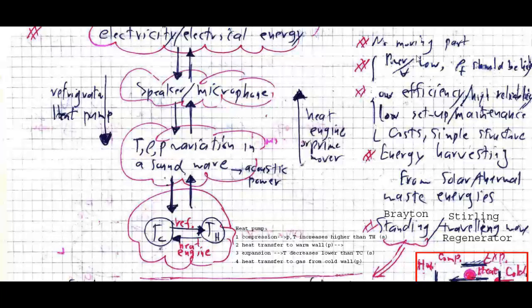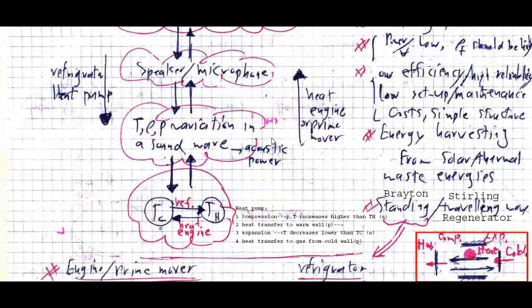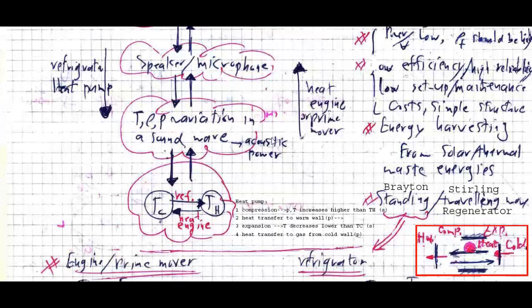Such systems have no moving parts — this is a general characteristic of any direct energy conversion method. However, the ratio of output power to volume is low. DEC devices generally have low efficiencies but higher reliabilities, low setup costs, low maintenance costs, and a simple structure. These devices can be used in different energy harvesting applications, related to harnessing energy from waste energies.